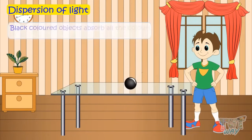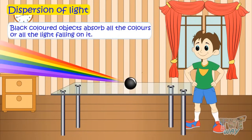Black color objects absorbs all light or all colors of the light and reflects none. And so appears black.